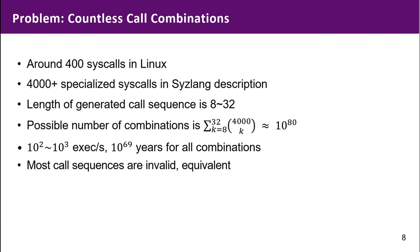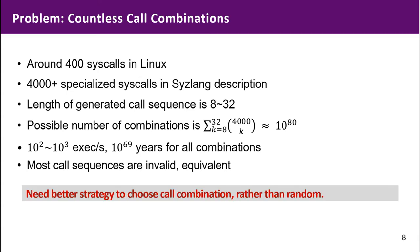More importantly, the kernel fuzzer would waste most of its time executing low-quality input. Therefore, we need a better strategy to choose call combinations.